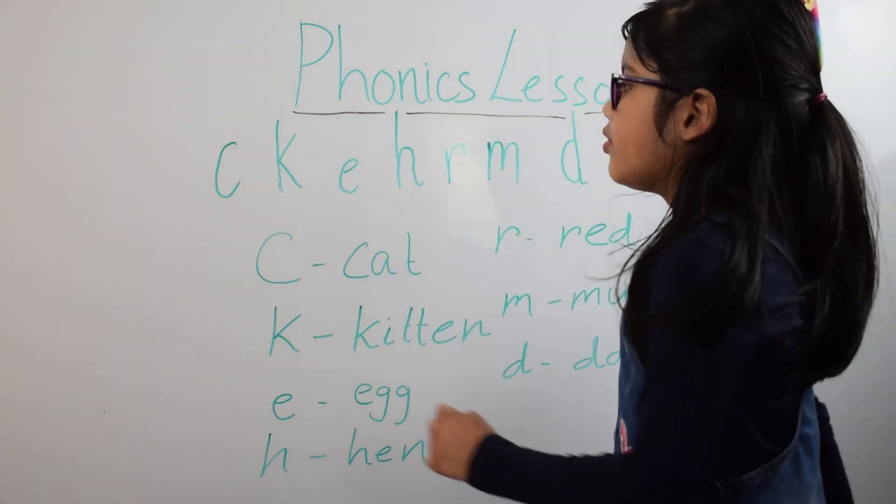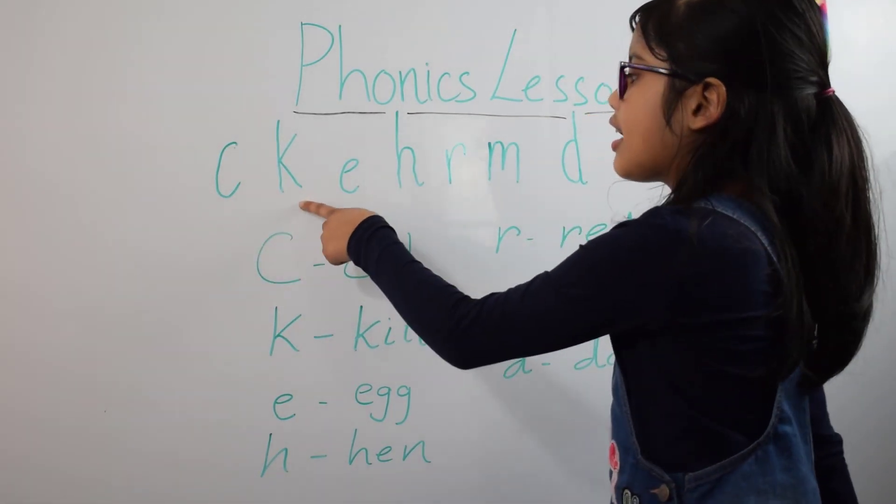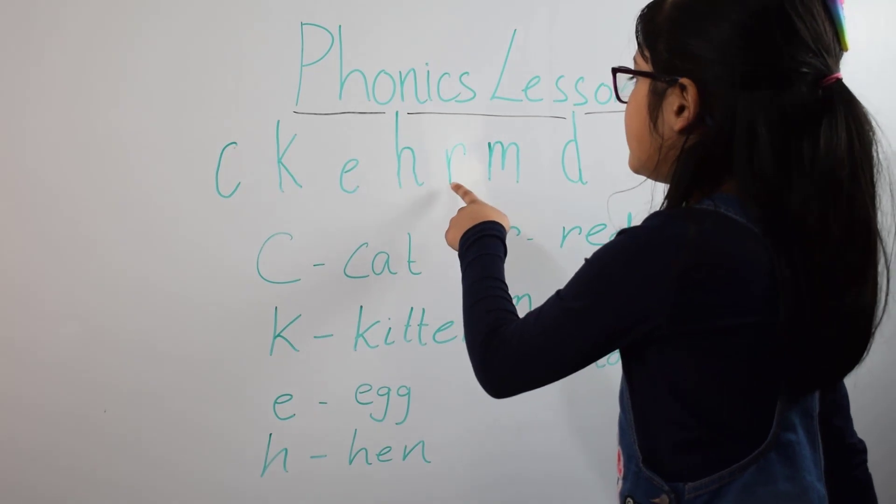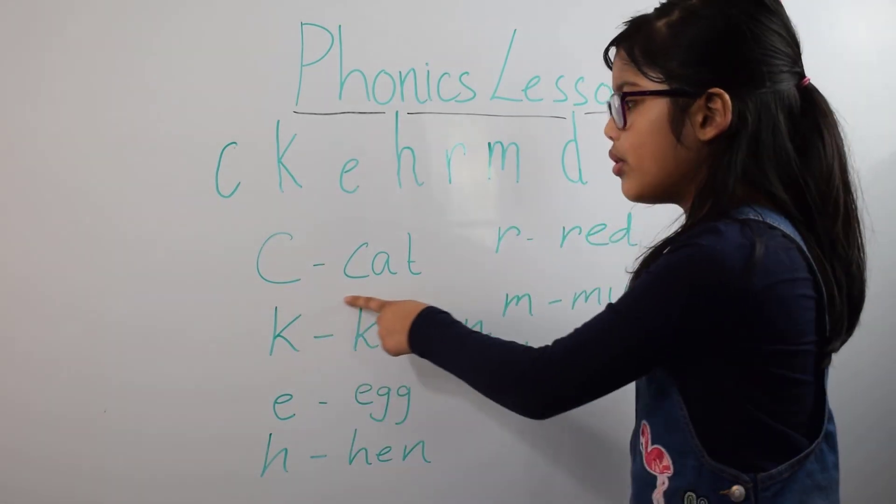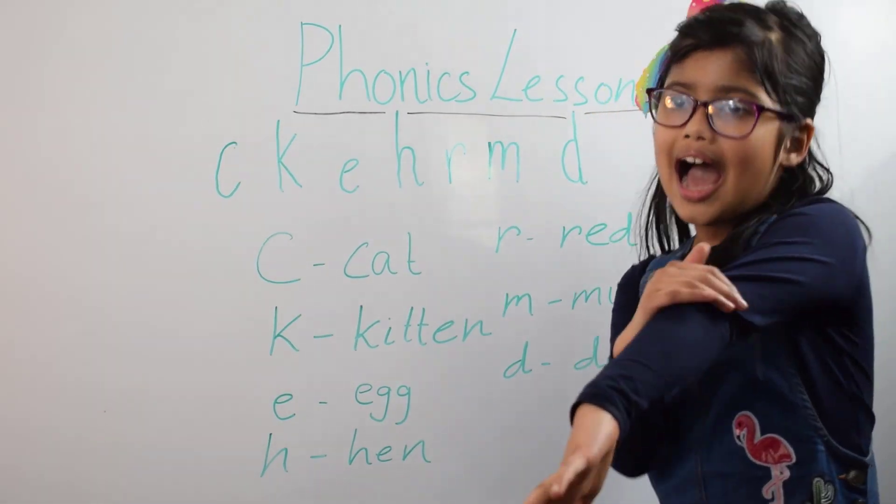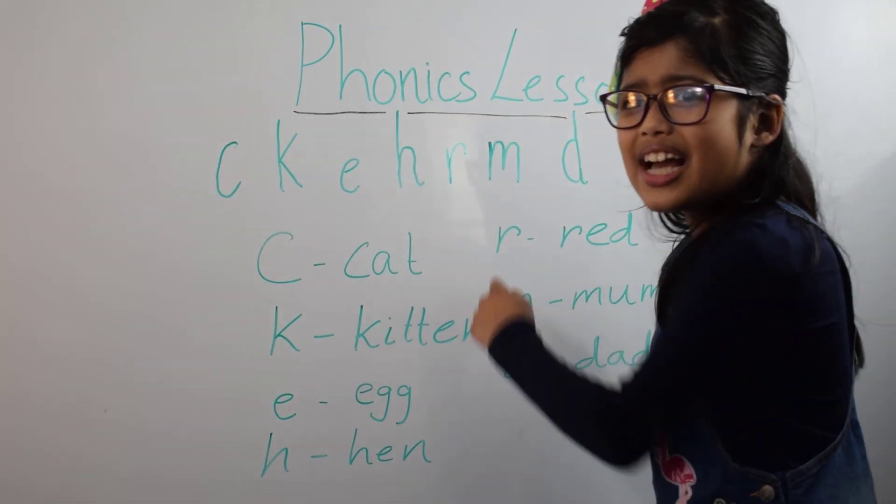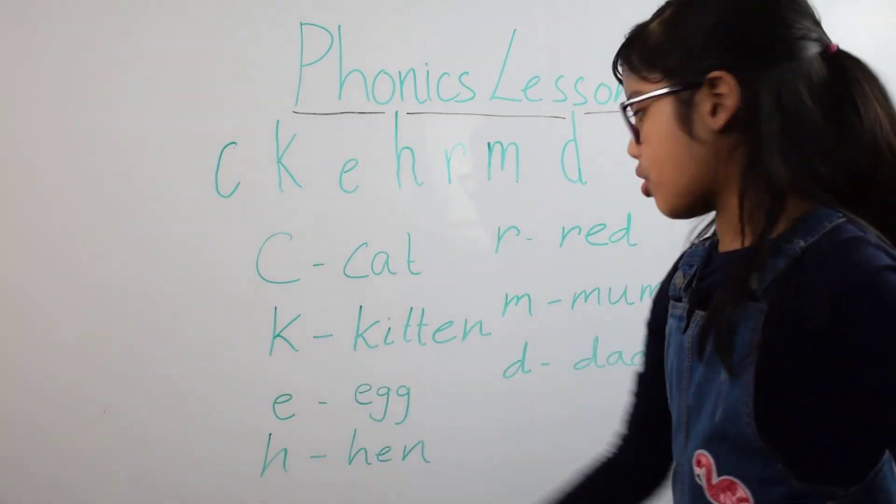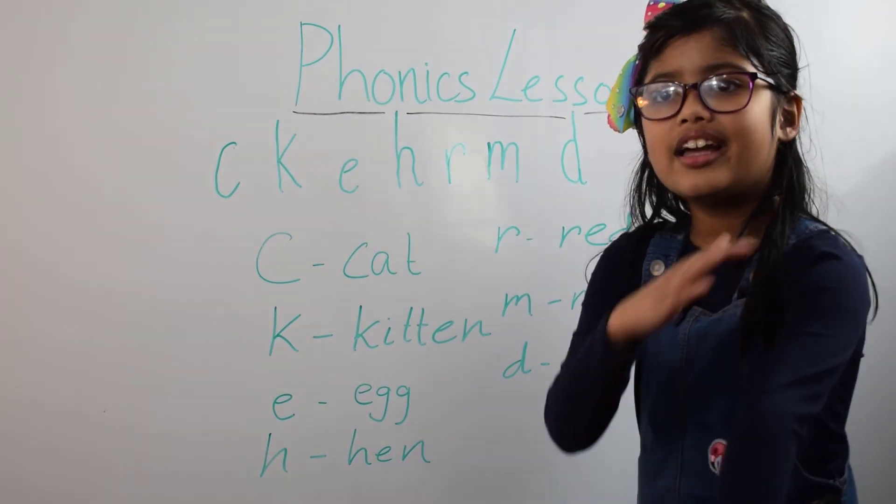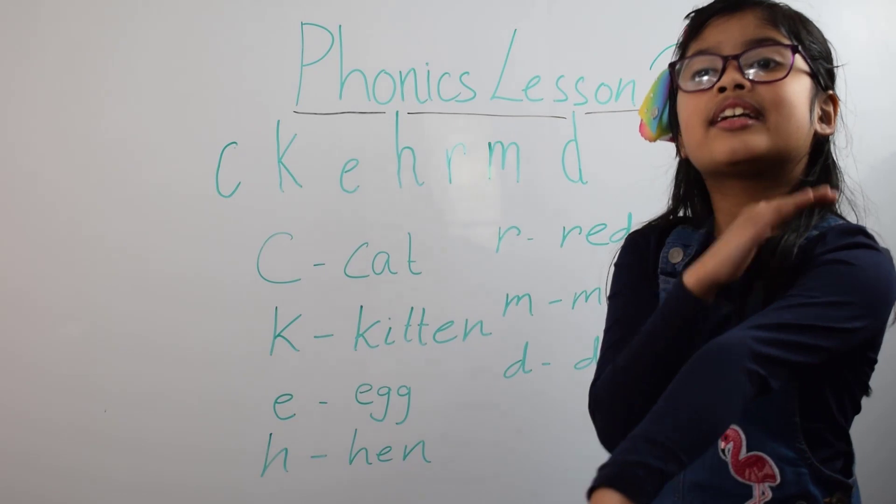Hello, we are now going to do phonics lesson 2. The letters we are working with are C, K, E, H, R, M, and D. Sound out with me: C-A-T cat. Sound out with me again: R-E-D red. We're going to work all the way through these ones: K-I-T-T-E-N kitten.